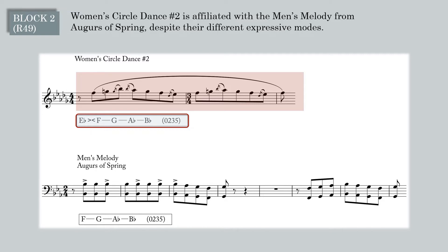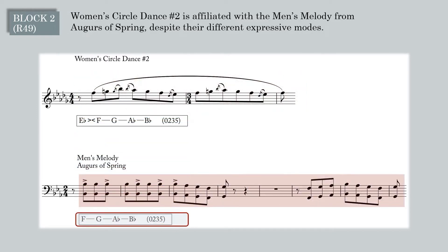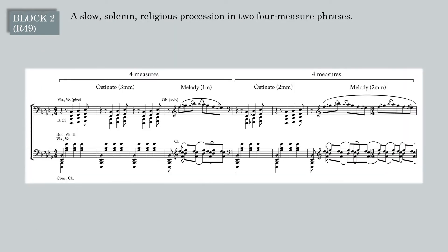Women's circle dance number two evokes the young men's melody from augurs; the affective contrast is heightened by the shared pitch location. The eight-measure block is divided evenly into two four-measure phrases, though the phrases themselves have different proportions. The first has three measures of ostinato and one measure of melody; the second has two measures of ostinato and two measures of melody. In the heavy tread of its quarter notes and regular four-measure groupings, the music suggests a slow, solemn procession.